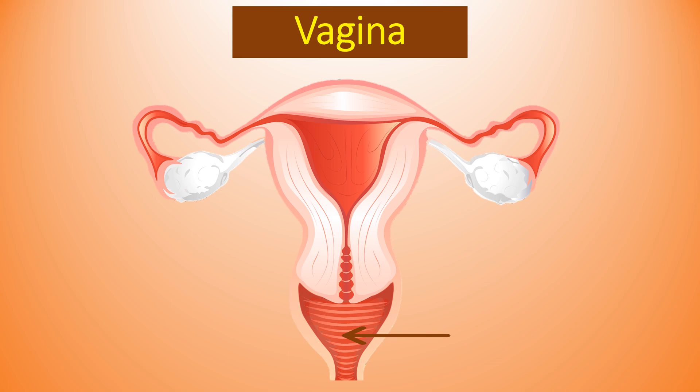The vagina is a kind of tube between the vulva and uterus, which acts as the female copulatory organ. The opening of the vagina may be covered by a thin piece of tissue called the hymen, which may be broken during sex or physical activities like cycling or riding a bike.